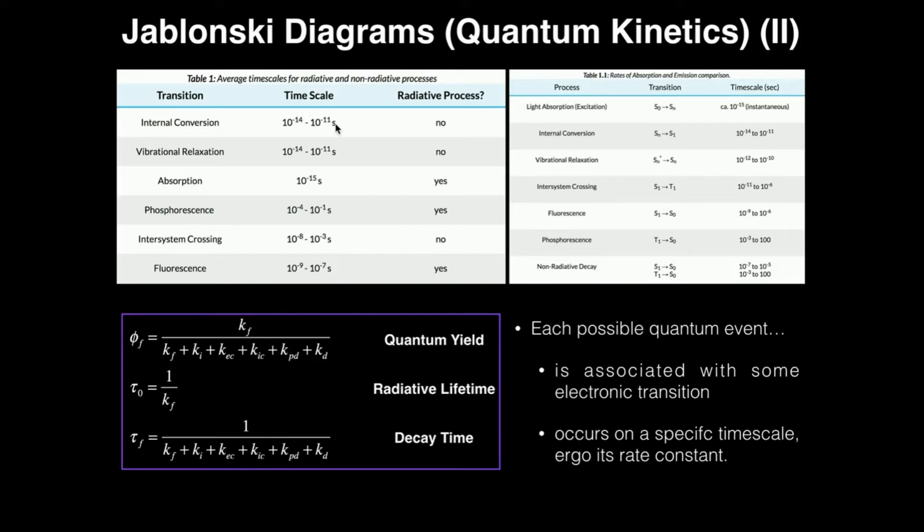They all occur on a specific time scale. So for example, internal conversion happens in about 10 to the minus 14th to 10 to the minus 11 seconds. Absorption is very fast. It occurs within 10 to the minus 15 seconds. You can see phosphorescence takes the longest. It's the slowest process, approximately 10 to the minus 4th to a tenth of a second. So phosphorescence is very slow, whereas absorption is very fast. So you can see the time scale in all of these.